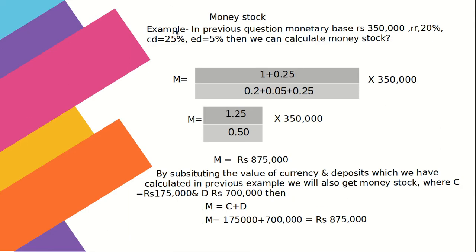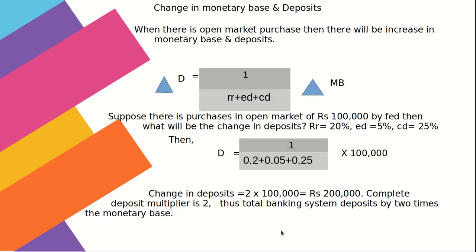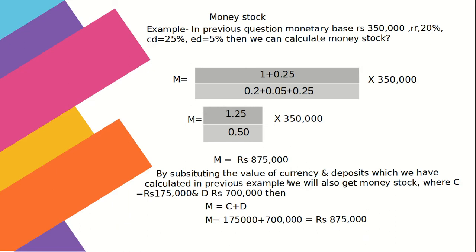With MB = 3,50,000, RR = 20%, CD = 25%, ED = 5%, the money stock M = 8,75,000. We can verify this using M = C + D: deposits = 7,00,000 and currency = 1,75,000, so C + D = 8,75,000, which matches the formula result.